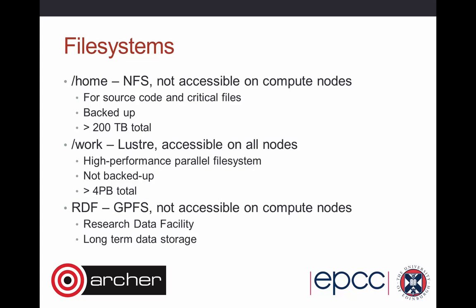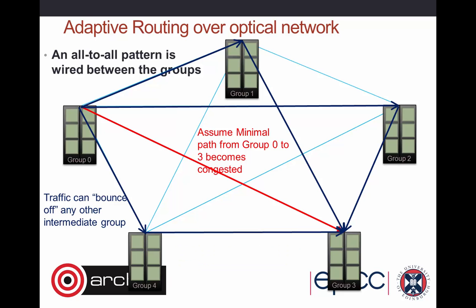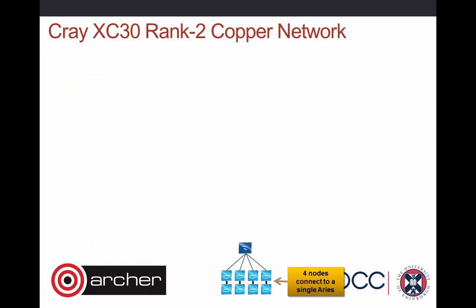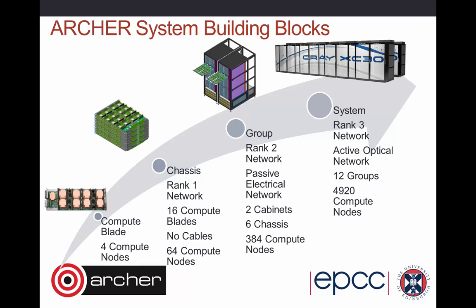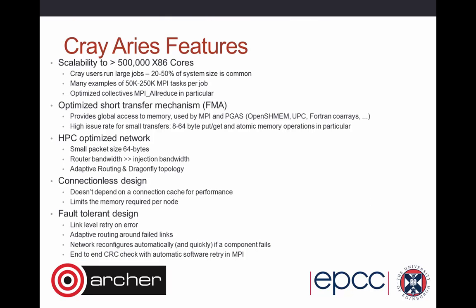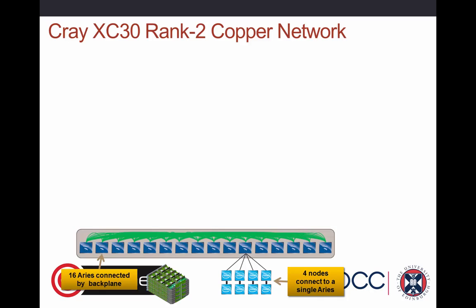The most important summary slide shows the system layered as blades into chassis into groups, with multiple groups connected through the optical network. Any Cray XC30 system will follow this structure — the number that changes is the final column: you may have more or fewer groups. On Archer we have 12 groups and 24 cabinets. The first three levels — compute blade, chassis, and group — will be the same for every Cray XC30 system.